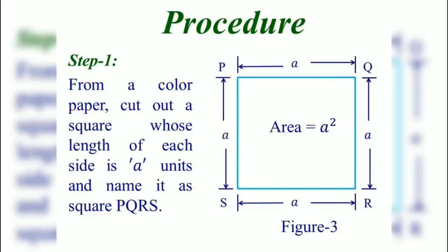Procedure, step 1: From a colored paper, cut out a square whose length of each side is A units and name it square PQRS. Here in figure 3, PQRS is a square having side A units and its area is A square square units.